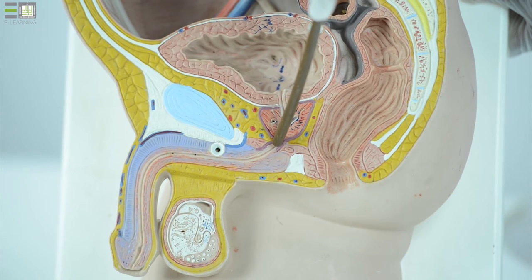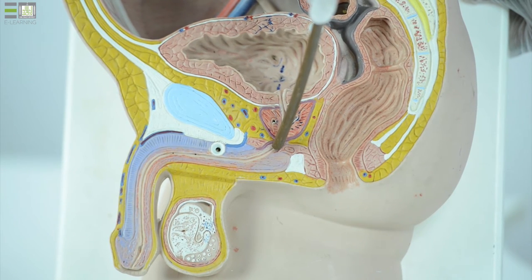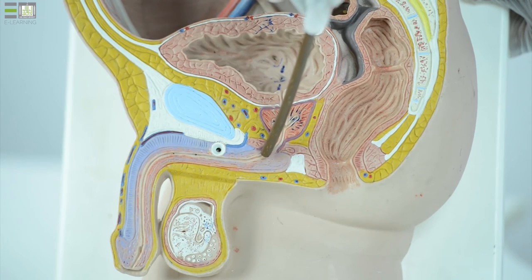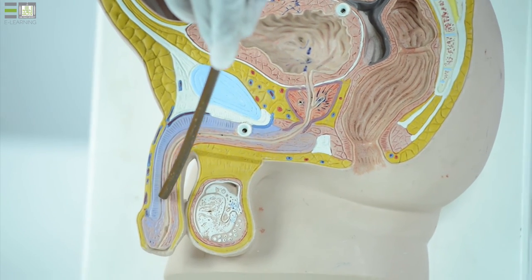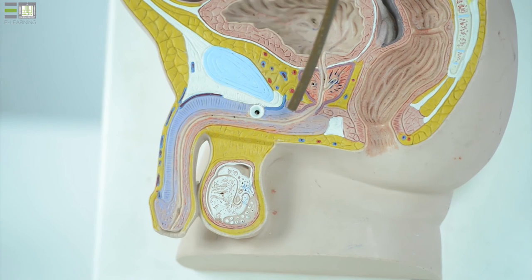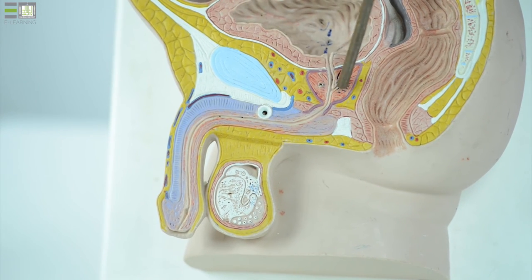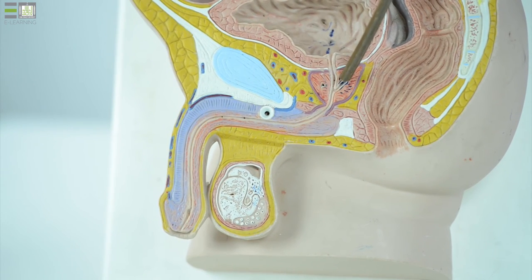It then lies within the deep perineal pouch to form the membranous urethra and then enters into the penis to form the penile urethra which is about 15 cm. Here also appears the prostatic gland and the ejaculatory duct.